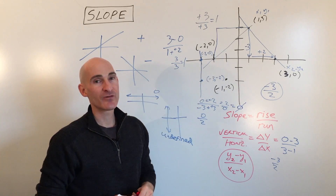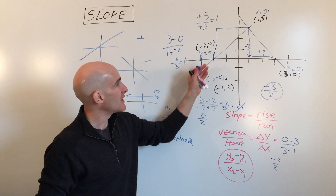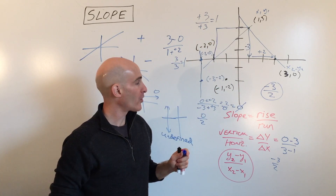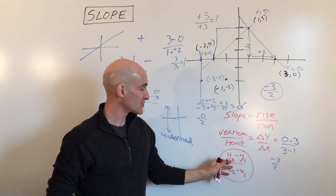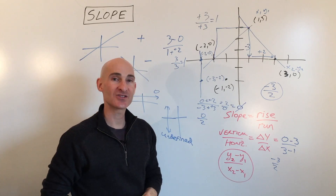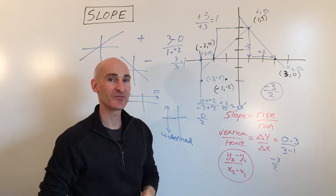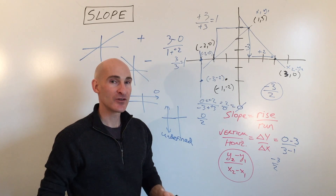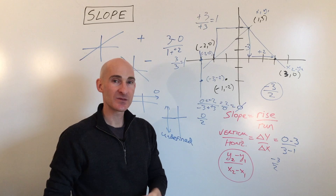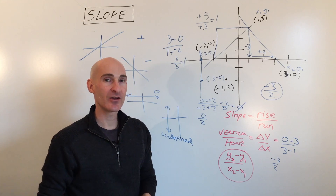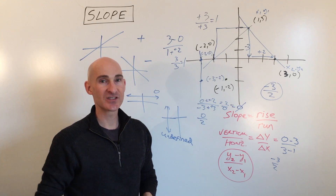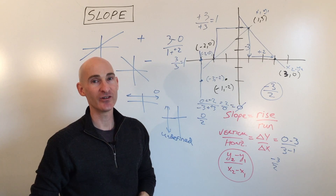To summarize finding slope: you can either count the rise over the run directly on the graph, or use the slope formula y2 minus y1 over x2 minus x1. If you're finding these videos helpful, subscribe to the channel and check out past videos.